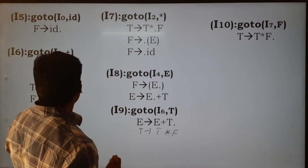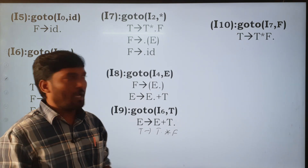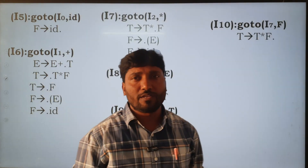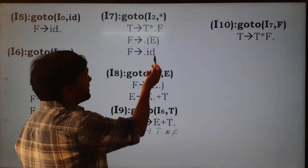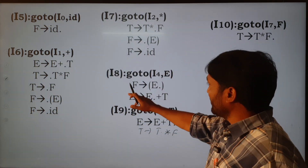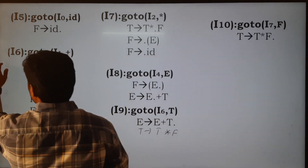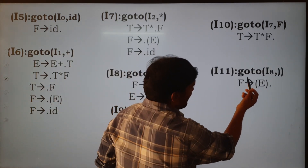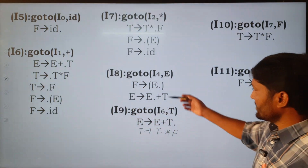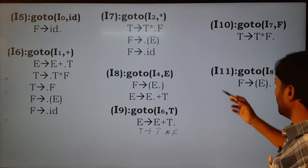I7 is over. Come to I8 — there is a close bracket after the dot. We apply the goto function for close bracket. Applying goto(I8, close bracket): it becomes I11 — F → (E). After that, E+ is over and there are no more symbols. This is how we calculate the canonical set of items for the given context-free grammar.